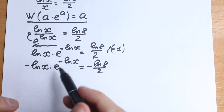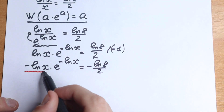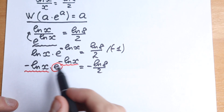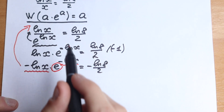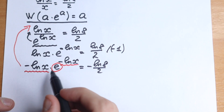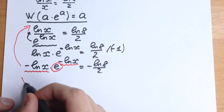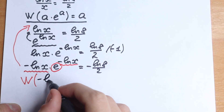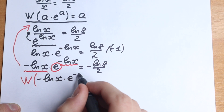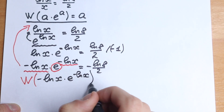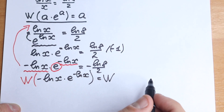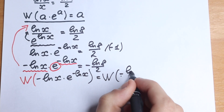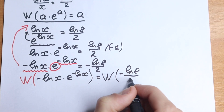Let me highlight this with the red pen. We have the same expression on both sides of e — the same a in the exponent and as a factor. This is exactly the Lambert W form, so we can apply the Lambert W function to both sides. We apply Lambert W to the left and to minus natural log 8 over 2 on the right.